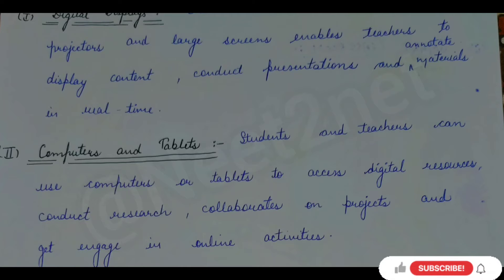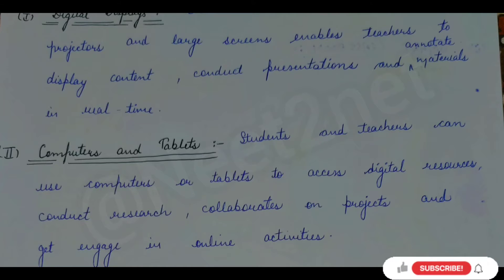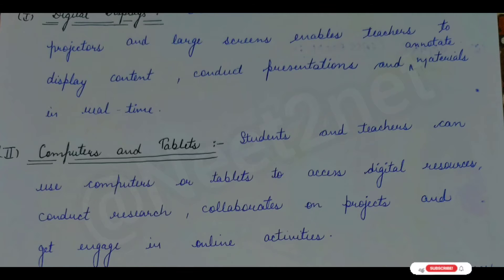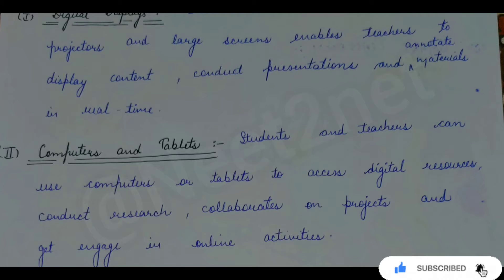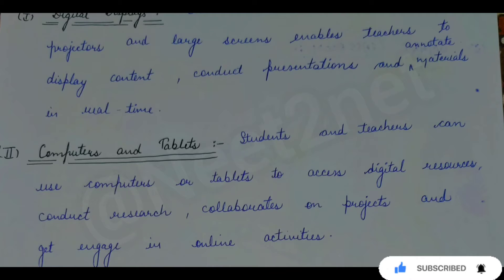Another element is computers and tablets. Students and teachers can use computers and tablets and any kind of digital device to access digital resources on their display, conduct research, collaborate on projects, and engage. At this stage, people study online — whether it's Google, YouTube, mobile, laptop or tablet through the internet. These are all digital resources. There are also many online courses and collaborative platforms where you can participate in projects and online activities.